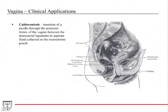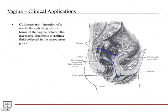Culdocentesis involves insertion of a needle through the vagina and through the posterior fornix into the pouch of Douglas — the peritoneal pouch where fluid or infectious content from the abdomen and pelvis can collect. The needle is placed between the uterosacral ligaments, which connect the uterus back to the sacrum, and fluid is aspirated out for laboratory tests to help with making a diagnosis.